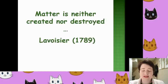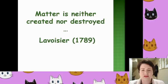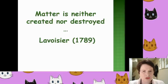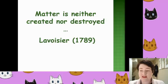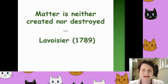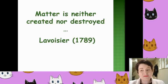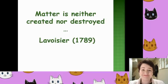The idea that things are not created or destroyed is called conservation of mass when talking about matter, or conservation of energy in physics. That means every single atom in your body has come from somewhere else. Current theories suggest the universe came from the Big Bang — basically there was nothing, then an explosion, then lots and lots of stars. So all the atoms in your body right now were once part of stars.